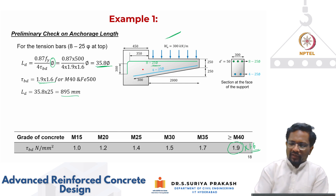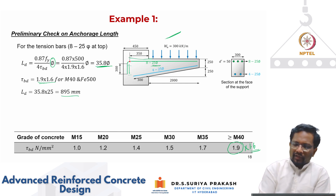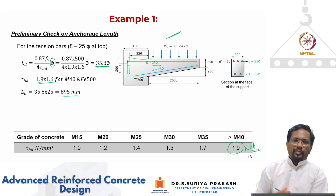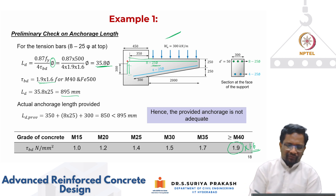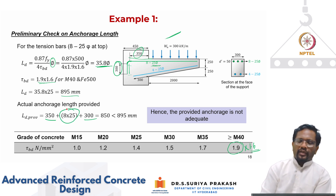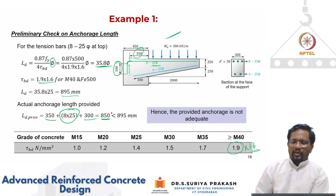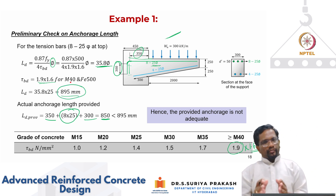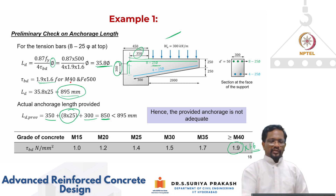Checking what is actually available: we have 350 mm inside the column plus 300 mm of bar extension, plus a standard 90-degree bend which gives an equivalent anchorage of 8 times the diameter. So 350 + 300 + 8 × 25 = 850 mm is available. But we need 895 mm, so it is short by 45 mm.